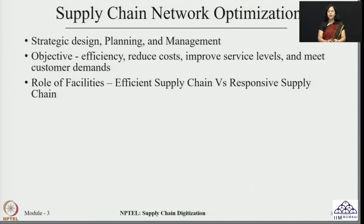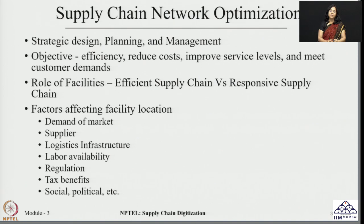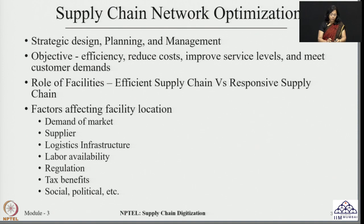These solutions can be obtained if we have an analytical way of solving this problem. When we talk about the location of a facility, there are several factors which affect it — such as the demand of the market, which can be quantified in terms of volume and frequency. The role of the supplier also plays a critical role, depending on what type of suppliers are available and where, and how they impact facility location decisions. Similarly, the logistics infrastructure already available plays a critical role in deciding the location.